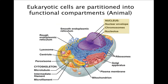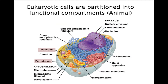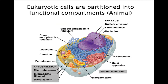The structures and organelles of eukaryotic cells can be organized into four basic functional groups. The nucleus, ribosomes, endoplasmic reticulum, and Golgi apparatus function in manufacturing. Organelles involved in breakdown or hydrolysis of molecules include lysosomes and peroxisomes. Mitochondria in all cells and chloroplasts in plant cells are involved in energy processing. Structural support, movement, and communication among cells are the functions of components of the cytoskeleton, plasma membrane, and cell wall.